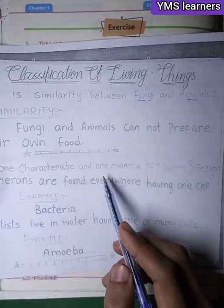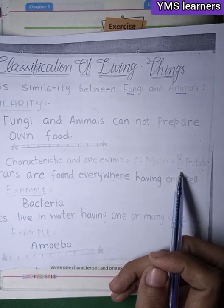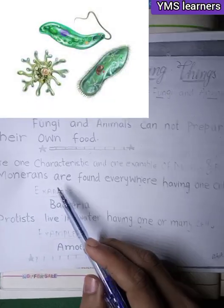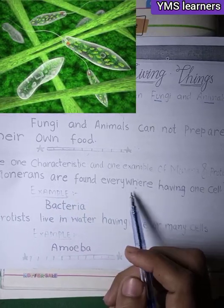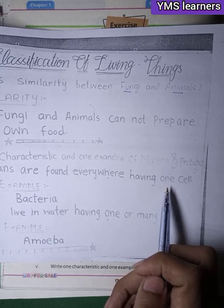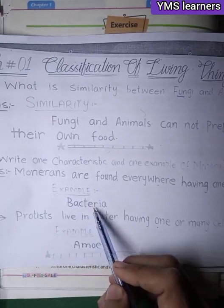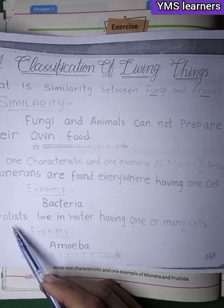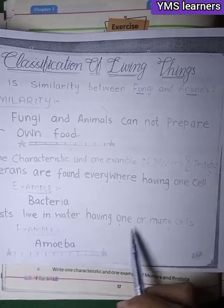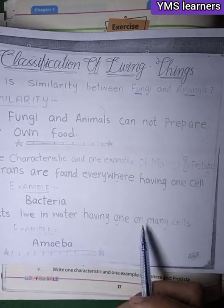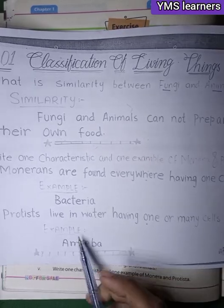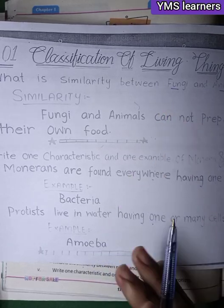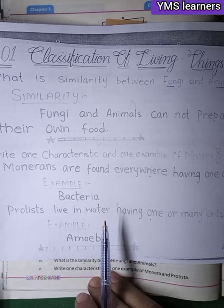Write one characteristic and one example each of Monerans and Protists. Monerans are found everywhere and have one cell — they are unicellular. An example is Bacteria. Protists live in water and have one or more cells. An example of a Protist is Amoeba and Euglena.